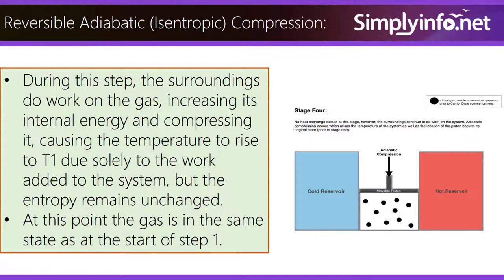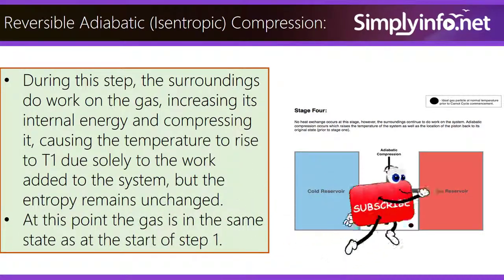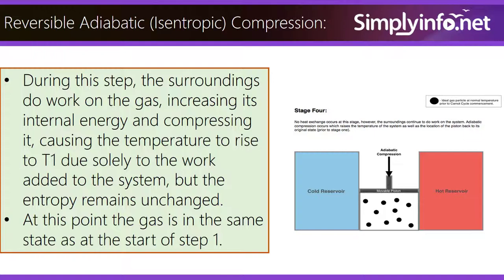During this step, the surroundings do work on the gas, increasing its internal energy and compressing it, causing the temperature to raise to T1 due solely to the work added to the system. But the entropy remains unchanged. At this point, the gas is in the same state as at the start of step 1.